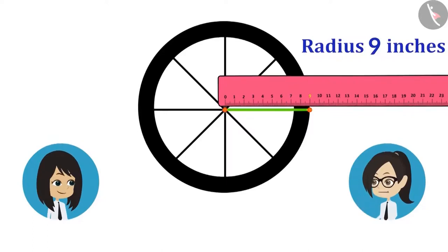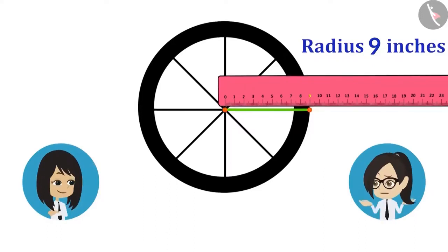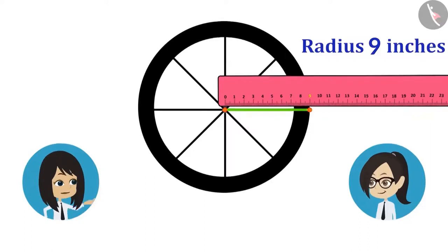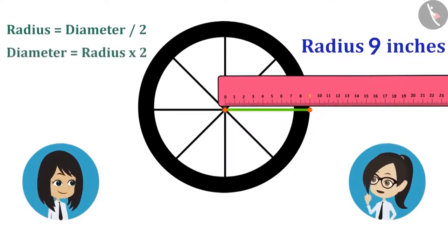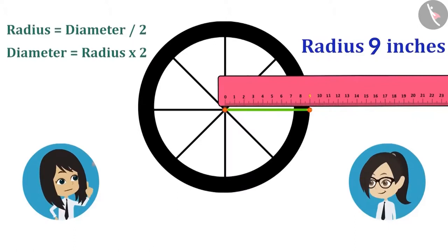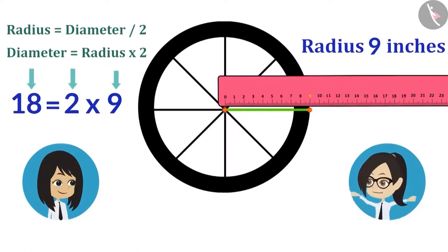Let's now measure its diameter as well. Why do we need to measure it? We can find it by measuring the radius. The radius is also called half of the diameter, so the diameter will be twice the radius. The radius is 9 inches and multiplied by 2 it will be 18 inches. This means the diameter of the wheel of our bicycle is 18 inches.